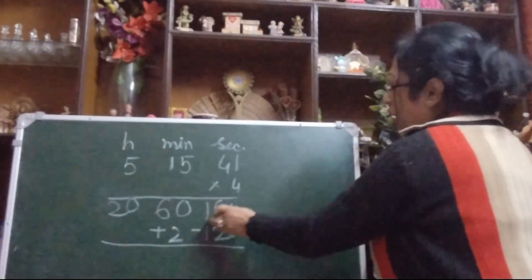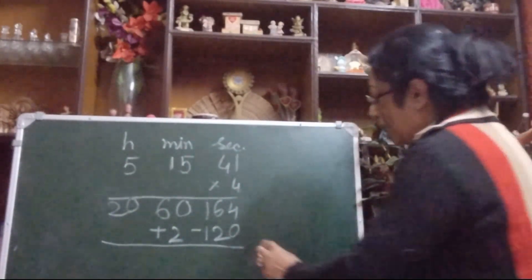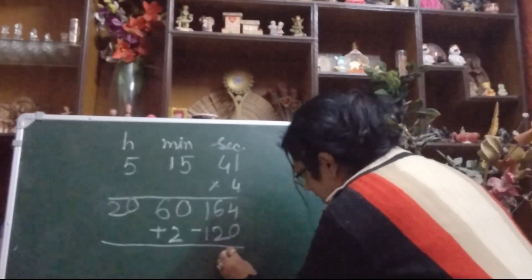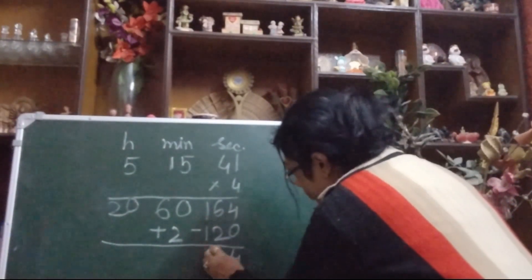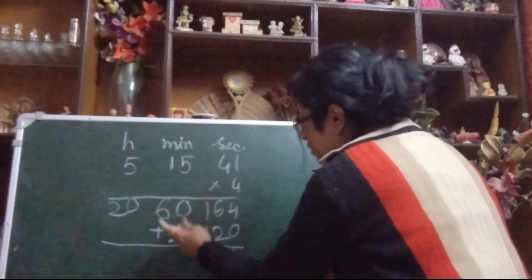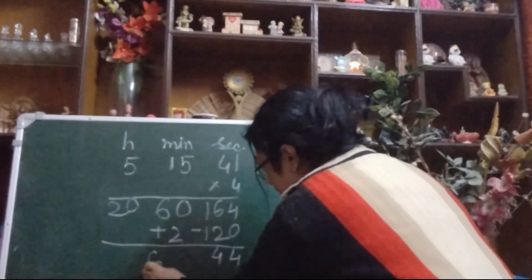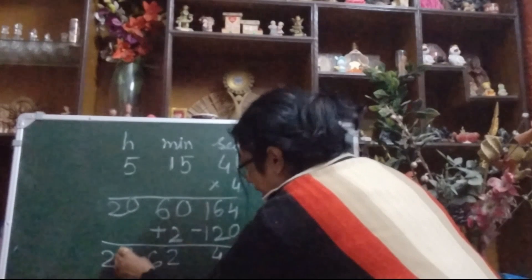Now we will do the calculation: 164 minus 120. Do the subtraction: 4 minus 0 is 4, 6 minus 2 is 4, and 1 minus 1 is 0. Now 60 plus 2, that is 62, and these 20 will come down.